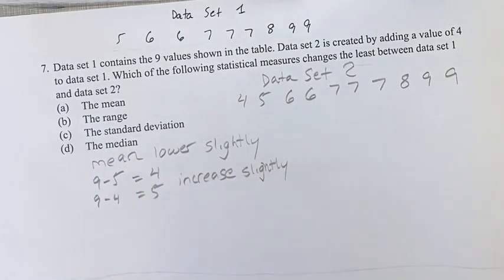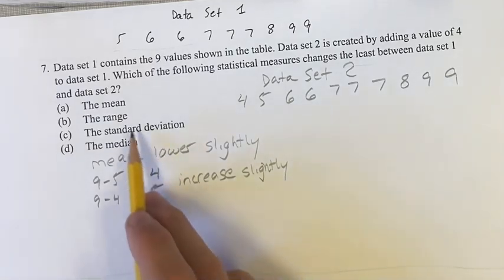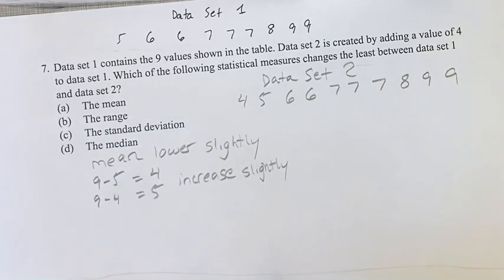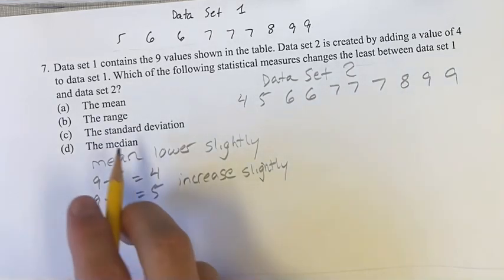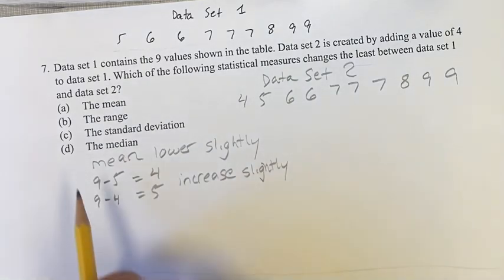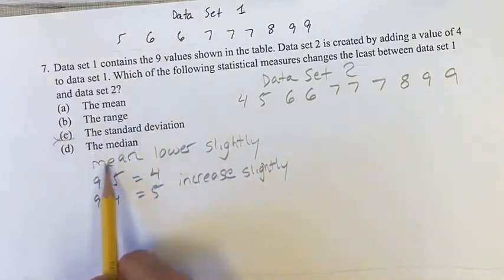Standard deviation, something we're definitely not going to be calculating today, is basically how bunched together or spread apart the values are. This is going to be changing slightly because we have this value out at the end, so the values are going to be a little bit more spread apart. But the SAT is never expecting you to actually calculate the standard deviation. You can use that as a rule forever. That will never happen on an SAT. So we can skip this and go straight to the median.